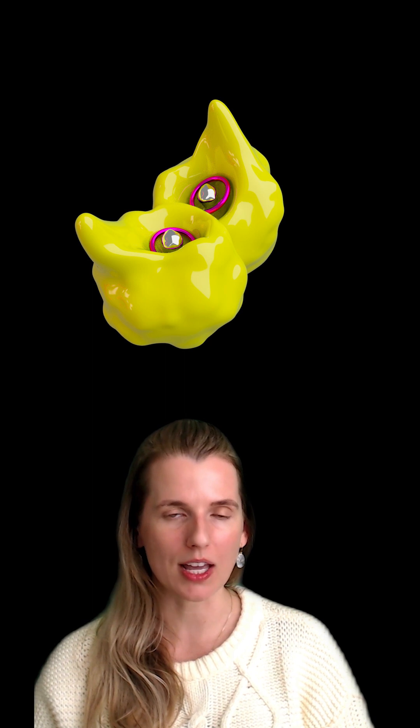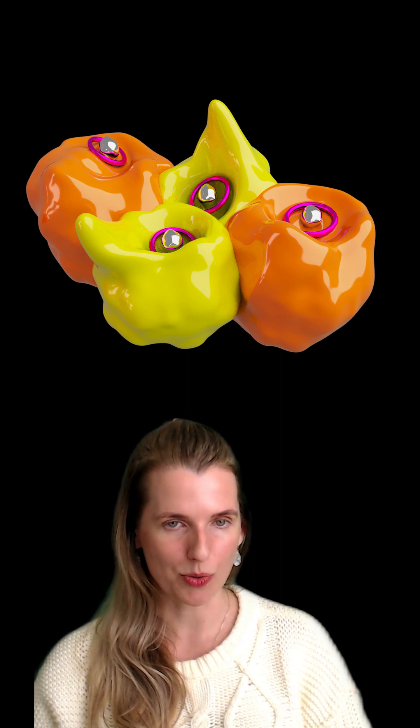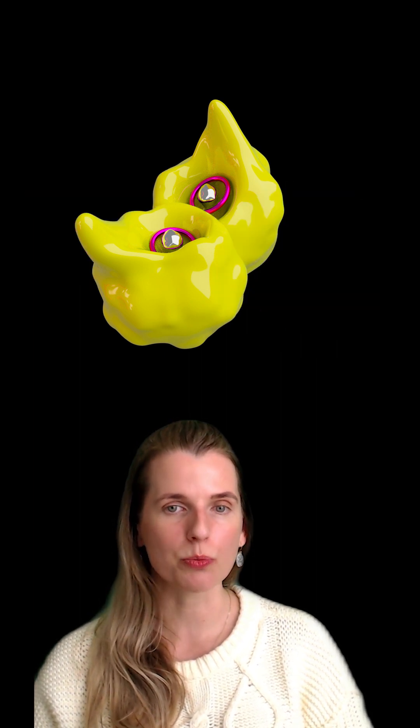So normal hemoglobin A is made up of two alpha globins here in yellow and two beta globins in orange. Hemoglobin S also has two alpha globins but it has two mutated beta globins now in green. This single change also causes the sickling.